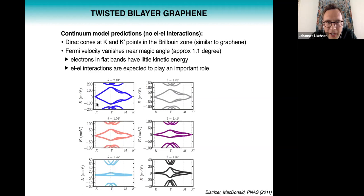So here you see band structures for different twist angles. If you look at the bottom row which is close to the magic angle, you see that these bands are extremely flat. Now small Fermi velocity means basically slow electrons, which means that the electrons have little kinetic energy. And in that case you would expect that electron-electron interactions play a very important role.